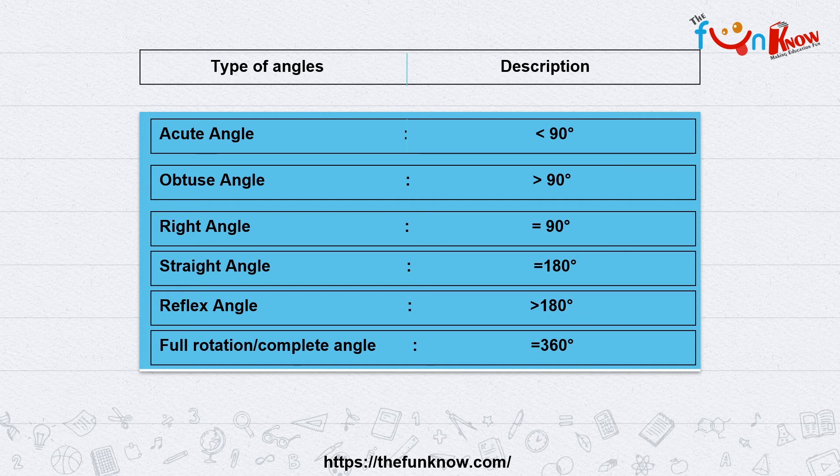The last is known as full rotation or complete angle. The starting position and ending position of this angle are the same after taking the whole rotation, which is why this angle measures 360 degrees.